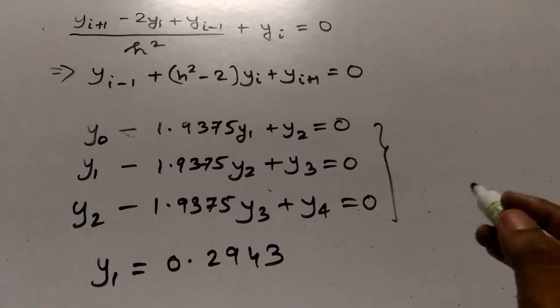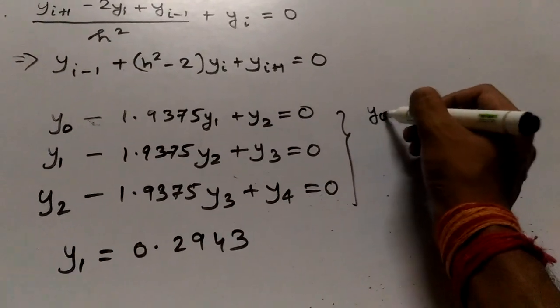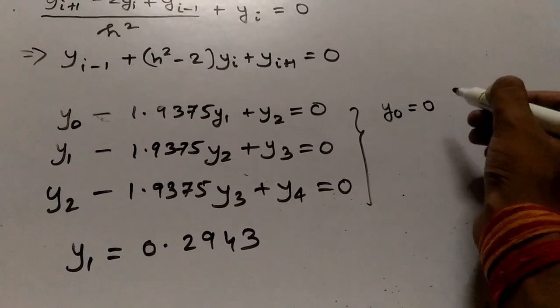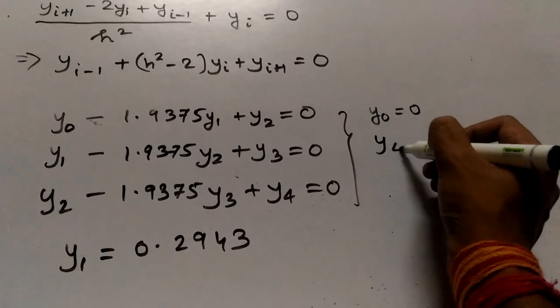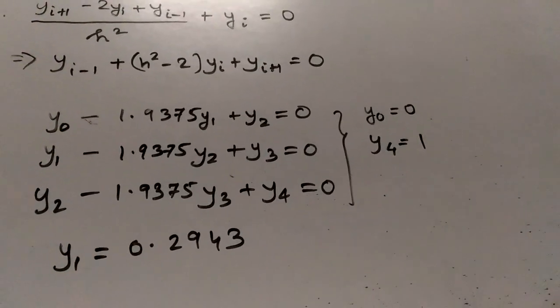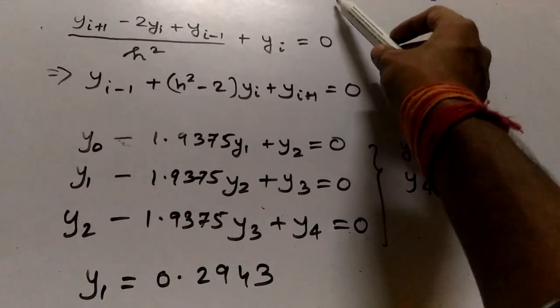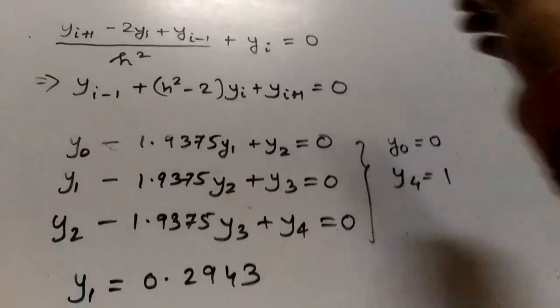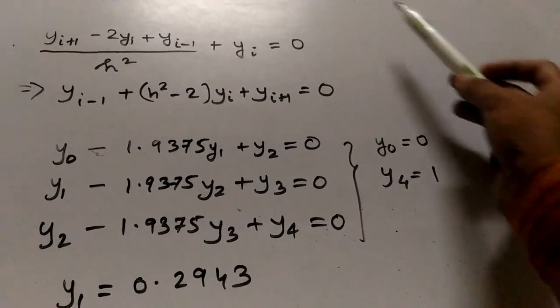Now before that, I must tell you, our y_0 is nothing but 0 and our y_4 is nothing but 1. Since our boundary conditions, you can see, y_0 is 0 and y_4 is 1.